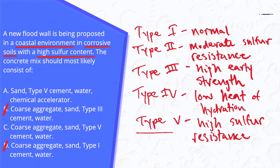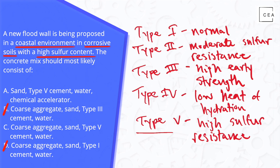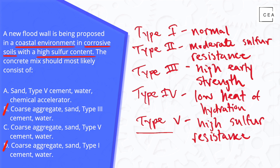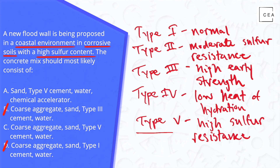Answer choice A consists of sand, Type 5 cement, water, and a chemical accelerator. Whereas answer choice C consists of coarse aggregate, sand, Type 5 cement, and water.